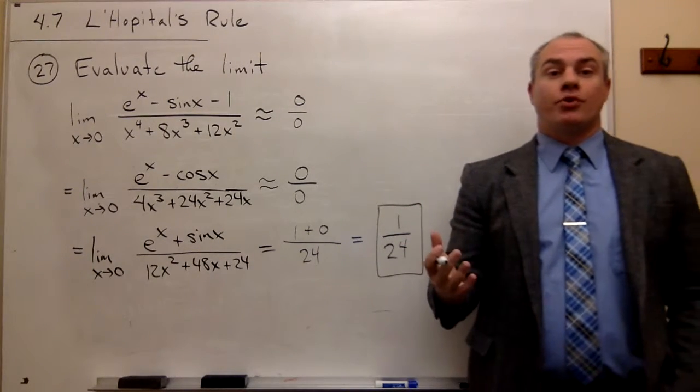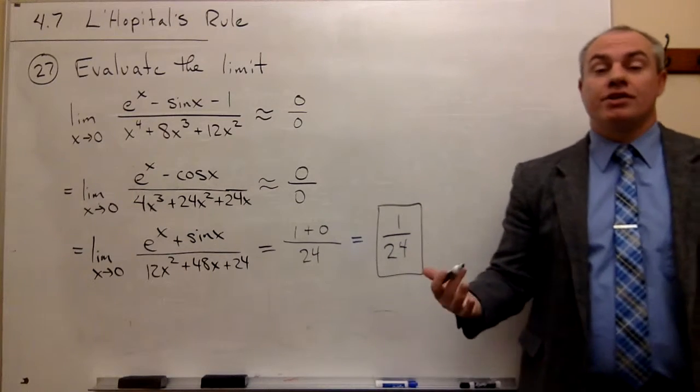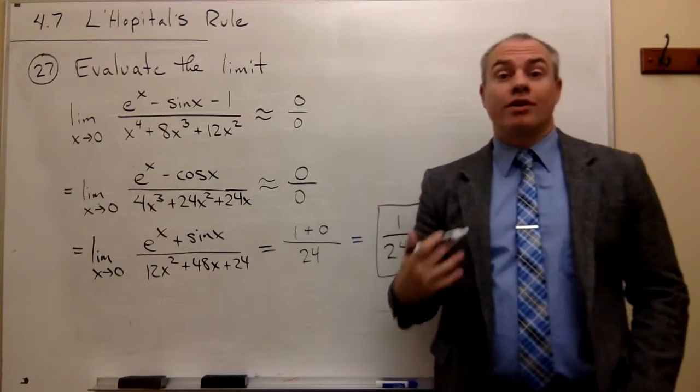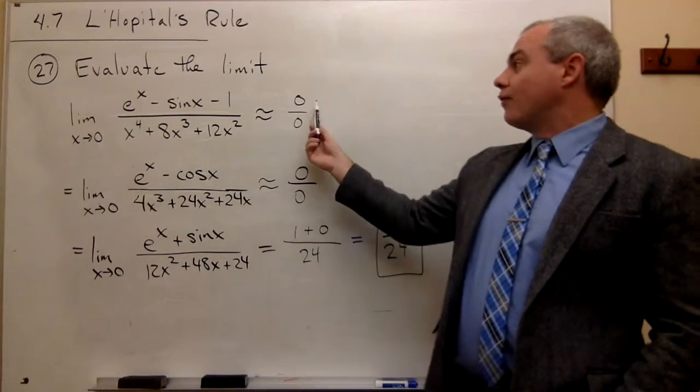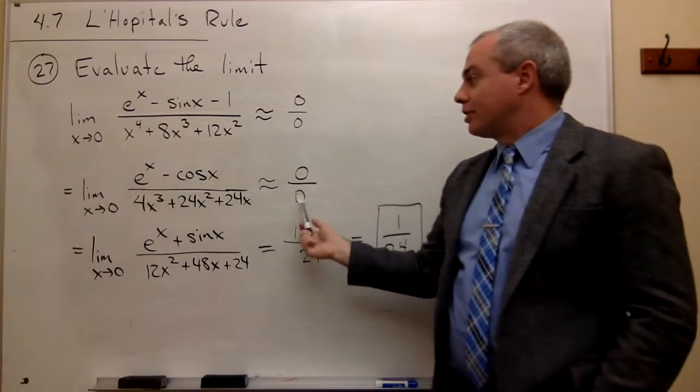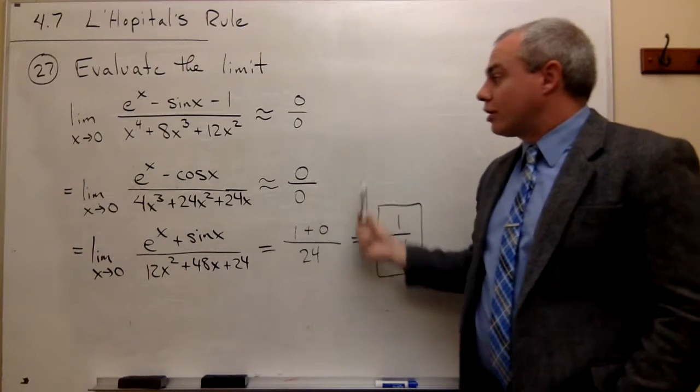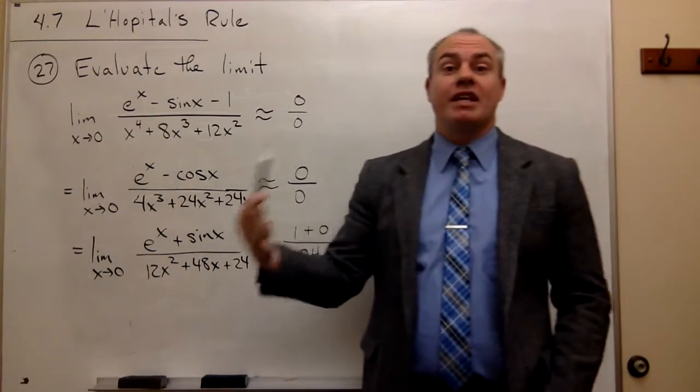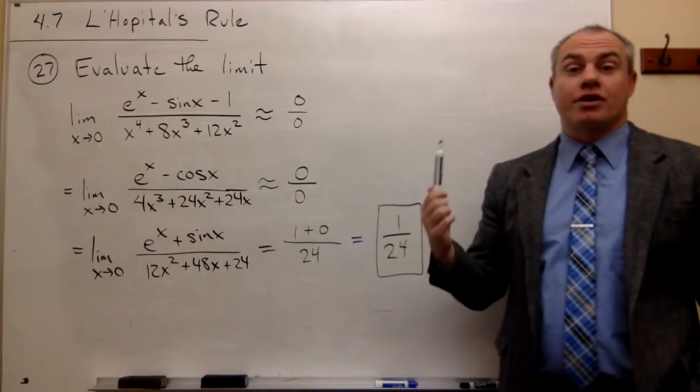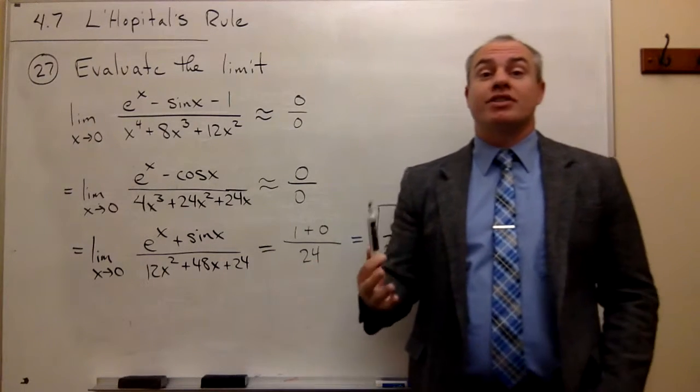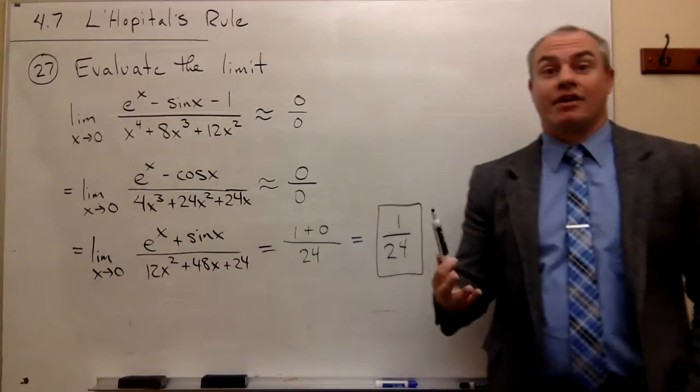So you can see that there are situations in which we will need to use L'Hôpital's rule more than one time to solve a problem. But if you see that you get a form 0/0, use L'Hôpital's rule. We get a form 0/0, we use L'Hôpital's rule. And we can keep doing that until eventually we get a form that's not 0/0 anymore, and then we can just take the limit in standard ways.